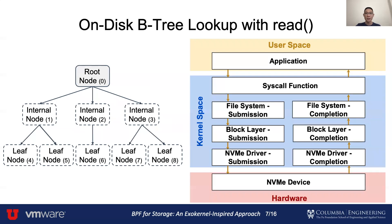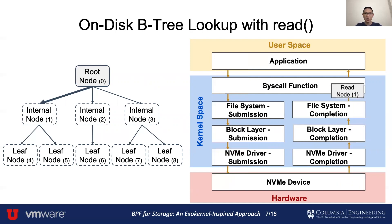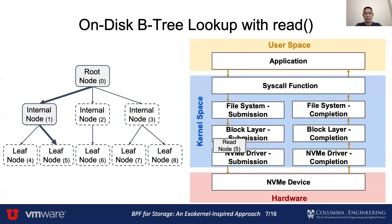To perform a B-tree lookup on an on-disk B-tree, we start at the root node. After doing a binary search within the root node, we can retrieve the offset of the next node. Normally, in order to read the next node into memory, we need to use the read syscall to submit the IO request. The request will go through the entire kernel storage stack and come back to the application. After receiving the data of the next node, we can do the binary search again to find the offset of the next node in user space. Then we need to call the read syscall again to retrieve the data of the next node, and the IO request needs to go through the entire software stack again. After the request is completed, we find that we are already at the leaf node, which means we reached the end of the B-tree lookup.